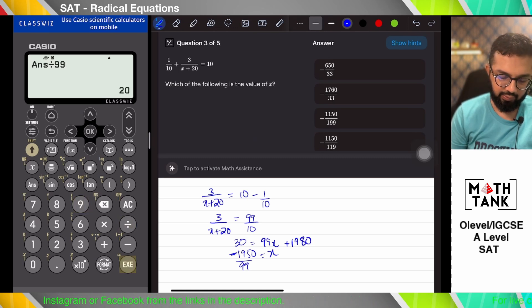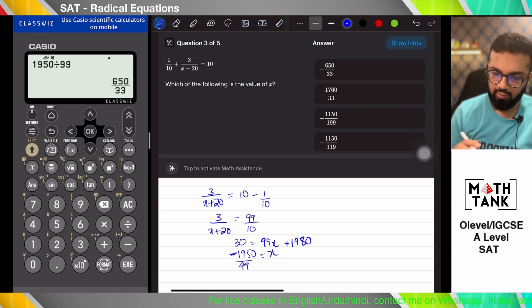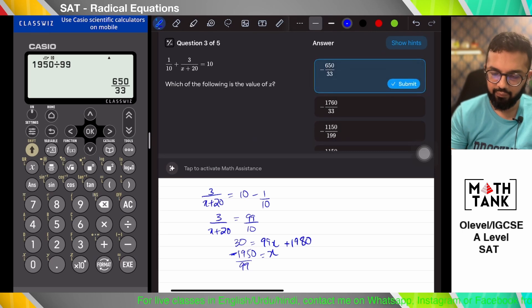Divided by 99. Let's see if we get the right terms. Okay, negative 650 over 83.